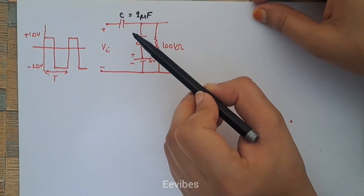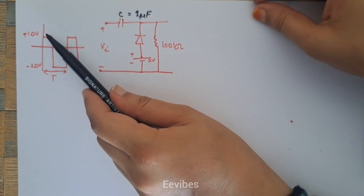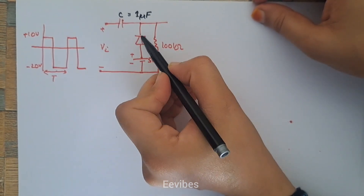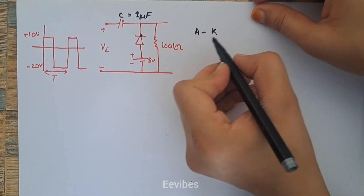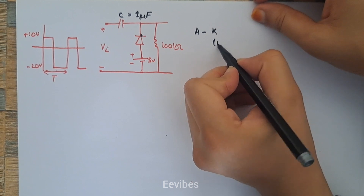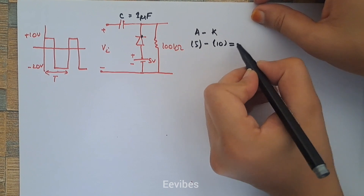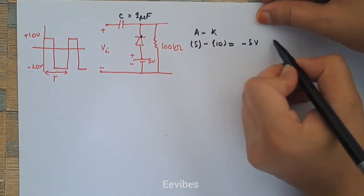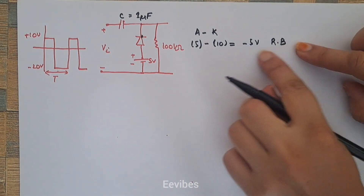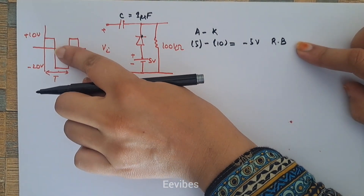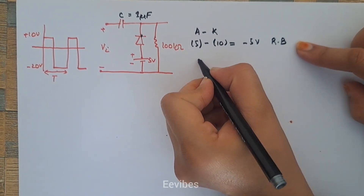We know that we start the analysis of the clamper circuit with that portion of the input voltage waveform where the diode will be forward biased. If we start with the plus 10 volt input, the cathode voltage will be equal to 10 volts while the anode is held at positive 5 volts, so the anode-to-cathode voltage will be equal to minus 5 volts — which reverse biases the diode. That's why we will not consider the positive cycle initially; we will start with the negative cycle.